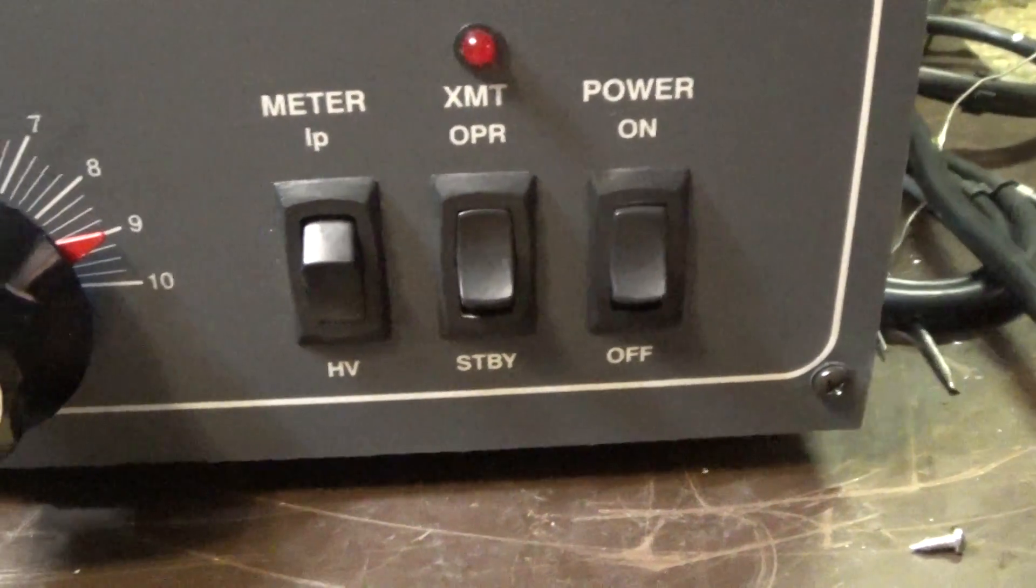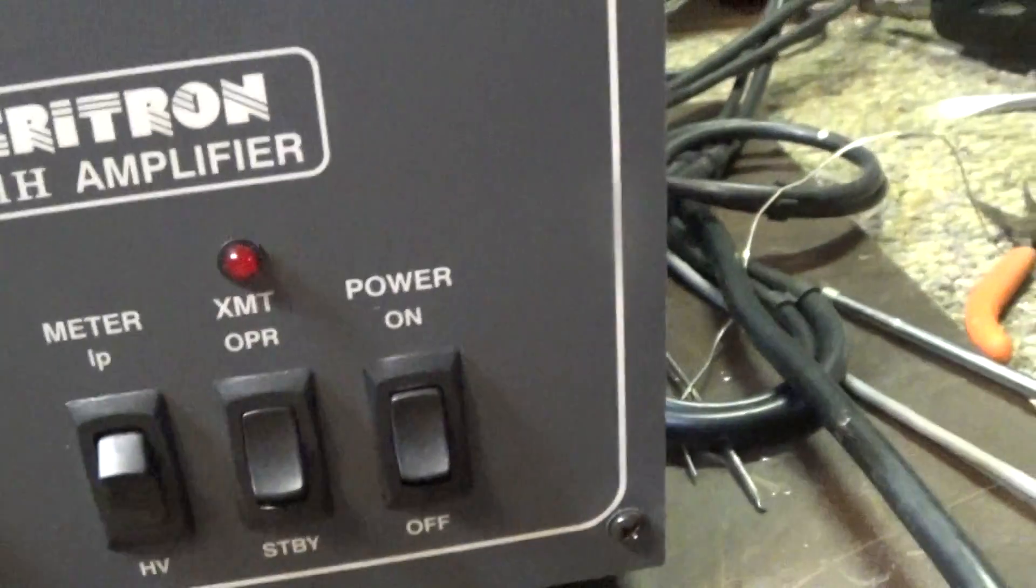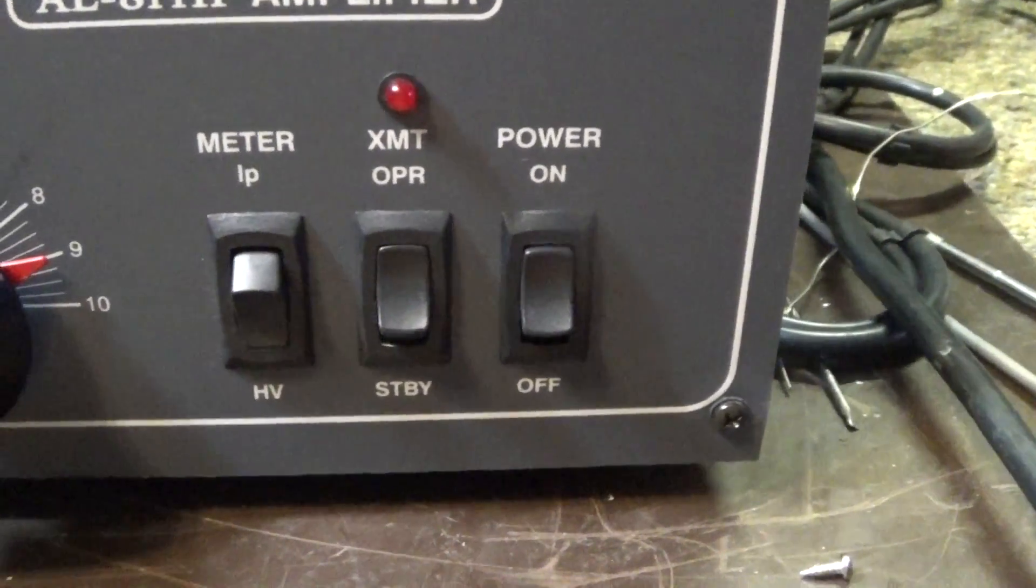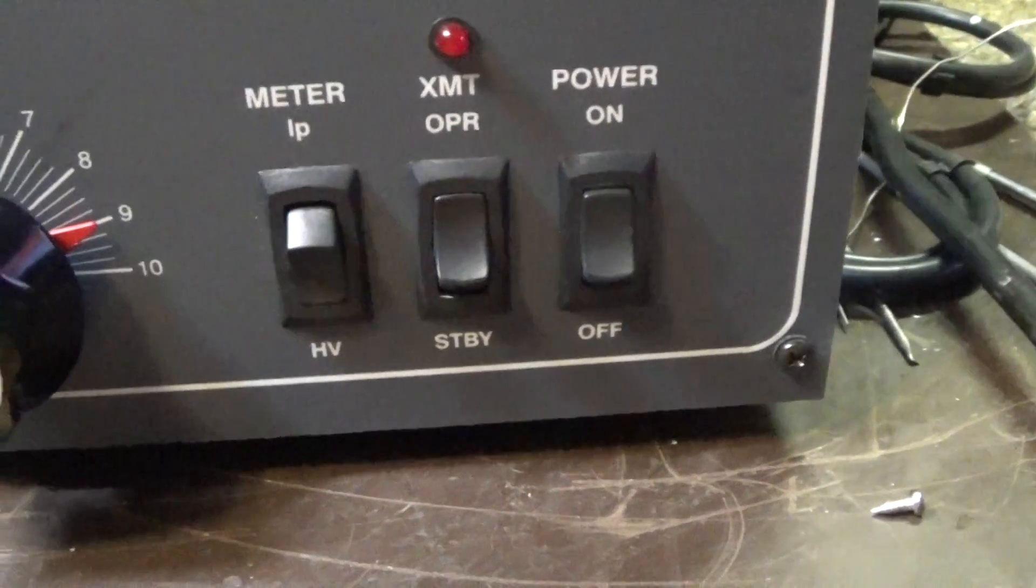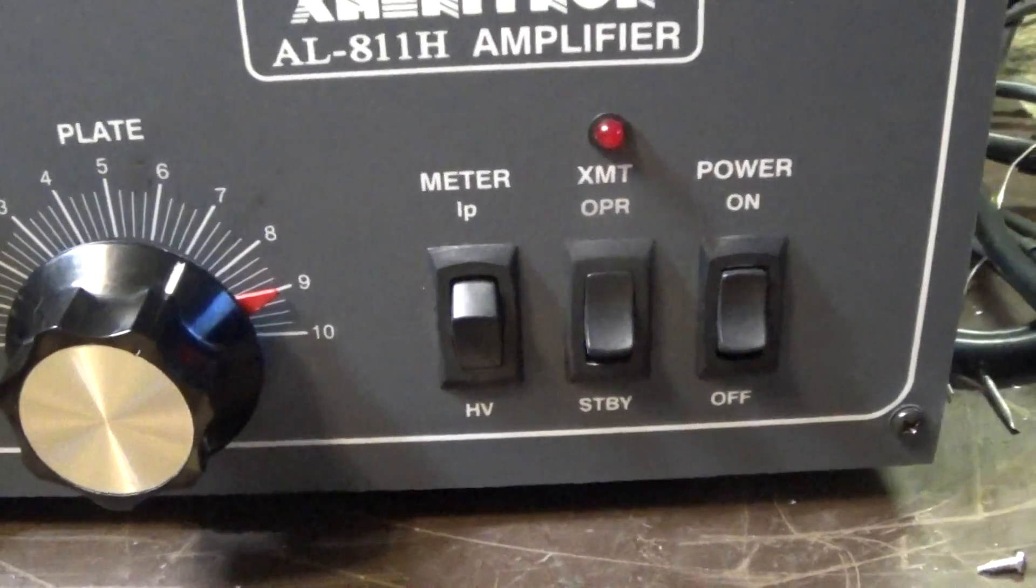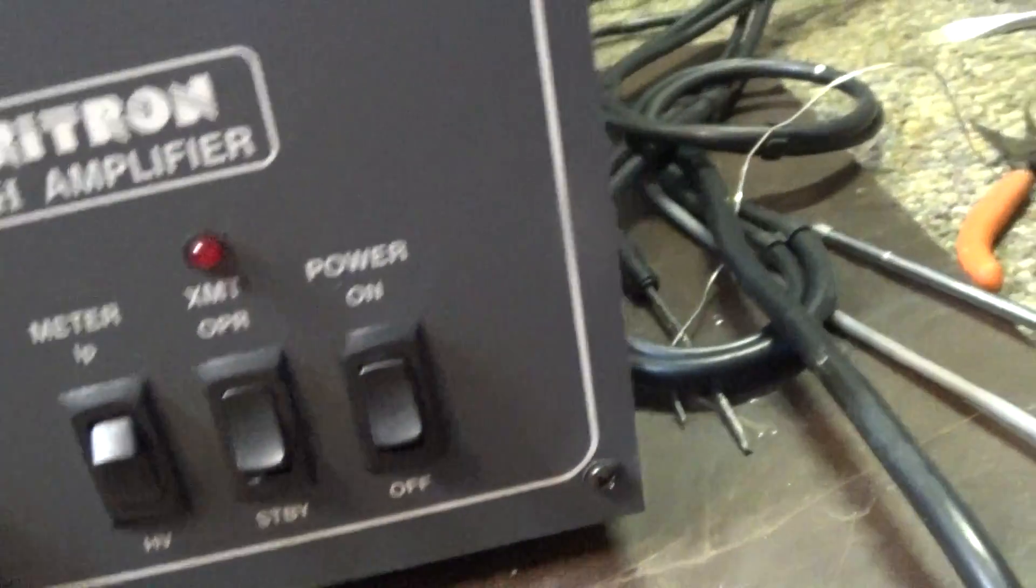On the front we got IP which is plate current. HV is high voltage. Operate standby switch. This is keyed by a foot pedal or it's got to be wired into the relay control of a transmitter anyway. Main power on and off.